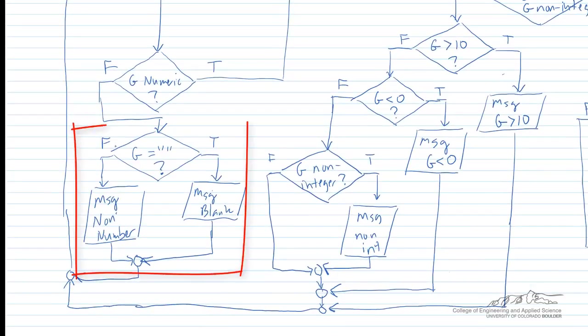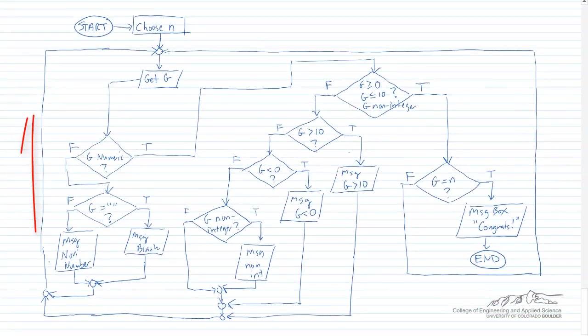So now we've differentiated. If it's not a number, then we're checking to see if it's just empty. If it's empty, we're going to let them know that they didn't enter anything. If it isn't empty space, then we're going to just tell them that they entered a non-number. In either case, we go back and we loop around and obtain G again.